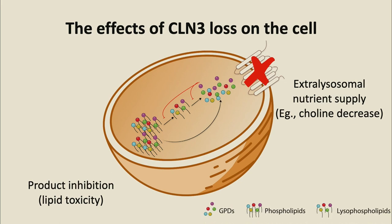With this project, we started from just trying to understand what CLN3 does, and now we have evidence that lysosomal phospholipid catabolism is a very important pathway in neurodegeneration. We still don't have evidence that CLN3 itself is the effluxer or part of a bigger efflux machinery, but we know it's required. We have evidence for both pathways — product inhibition and lipotoxicity, as well as extra-lysosomal deprivation. We now have the phospholipases in hand to test both hypotheses and their contribution to the disease phenotype.